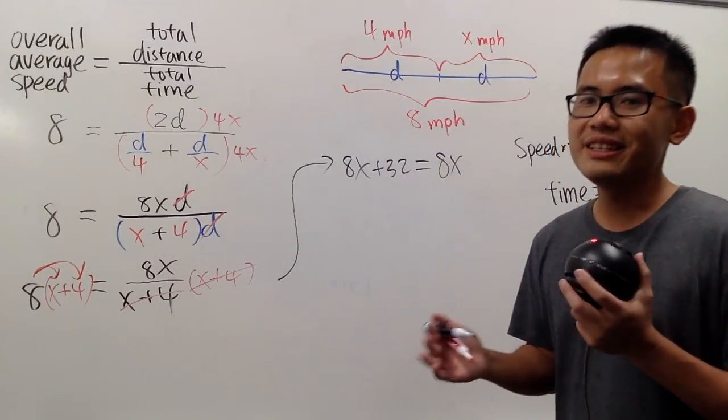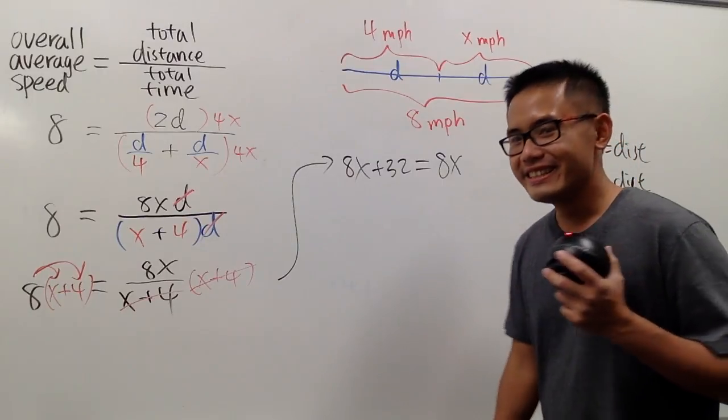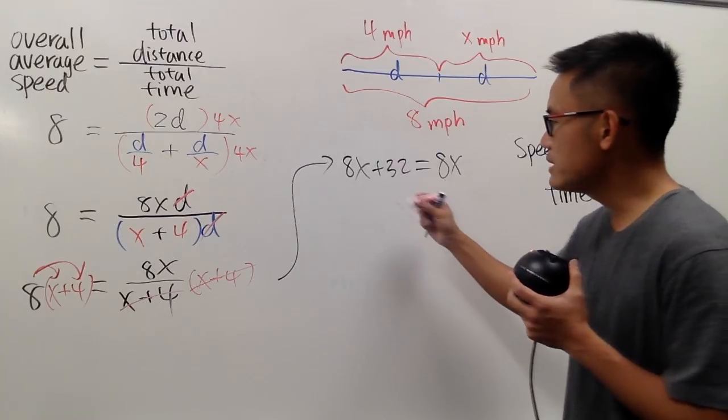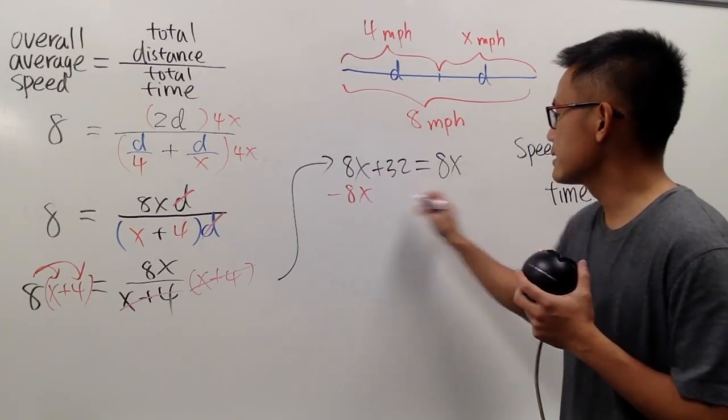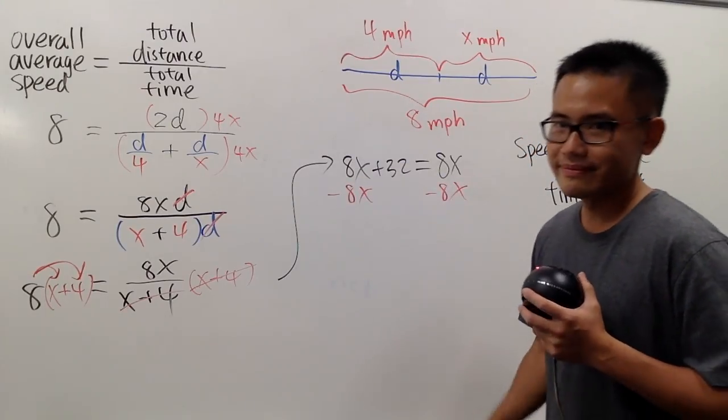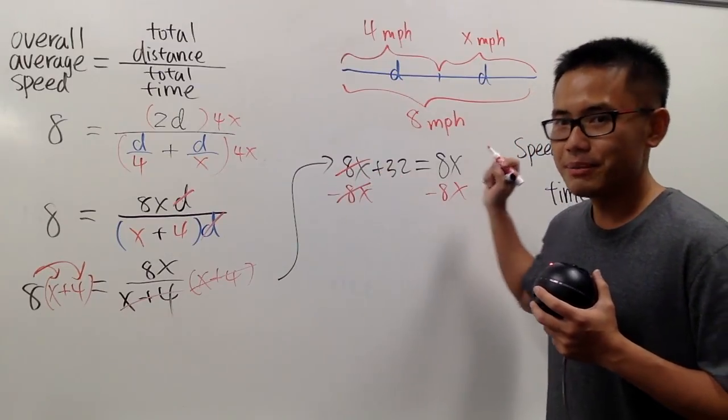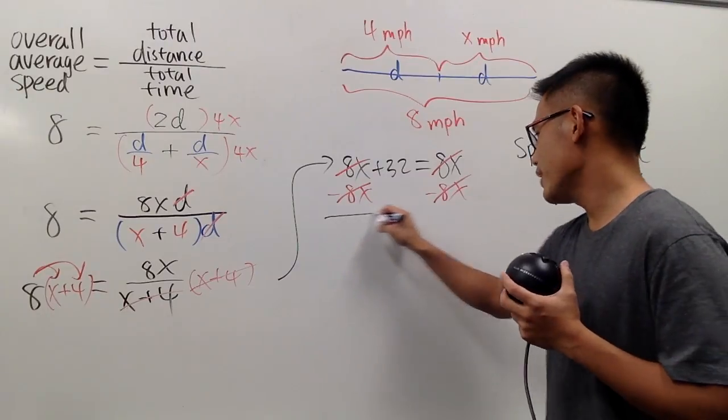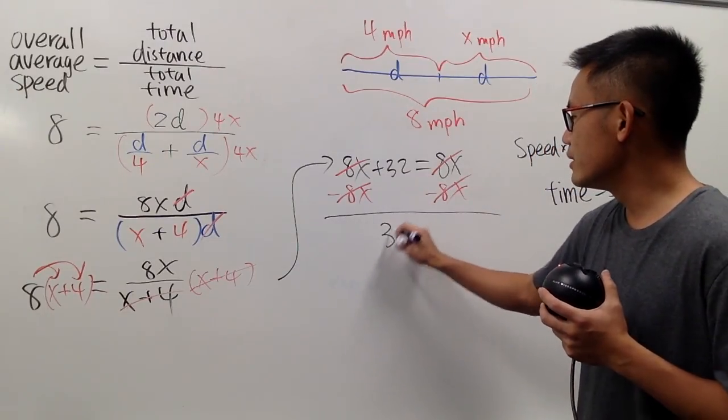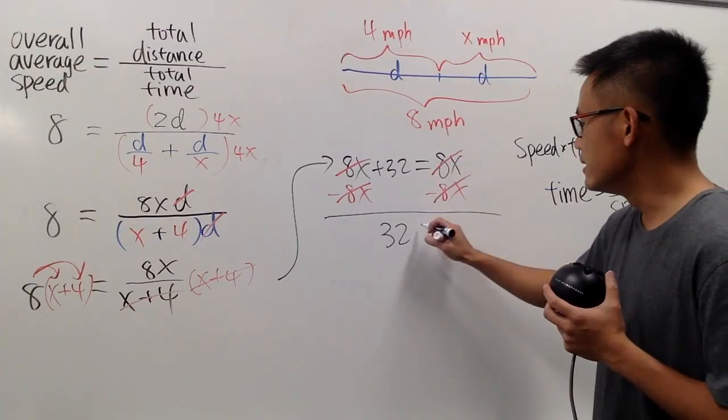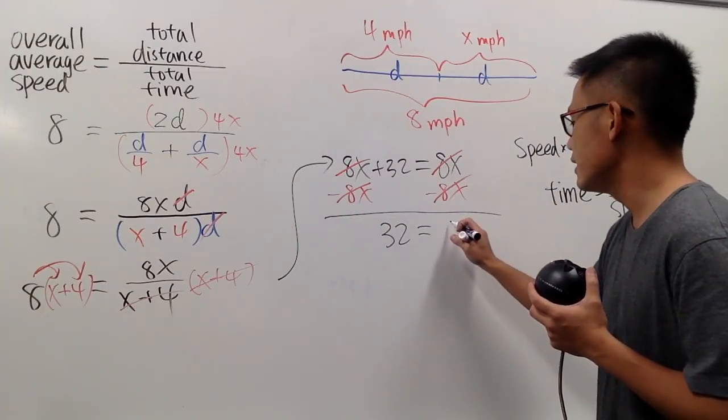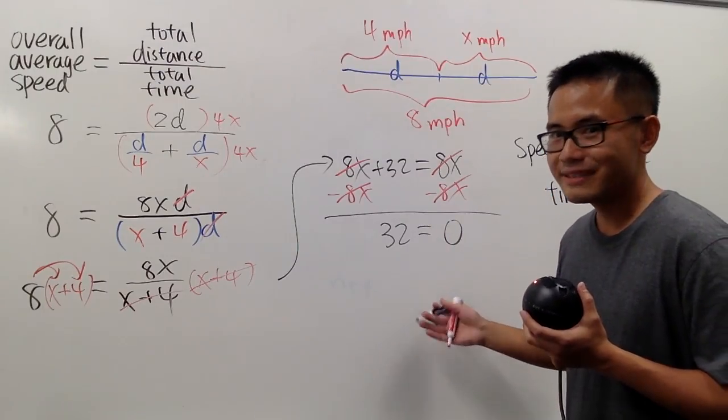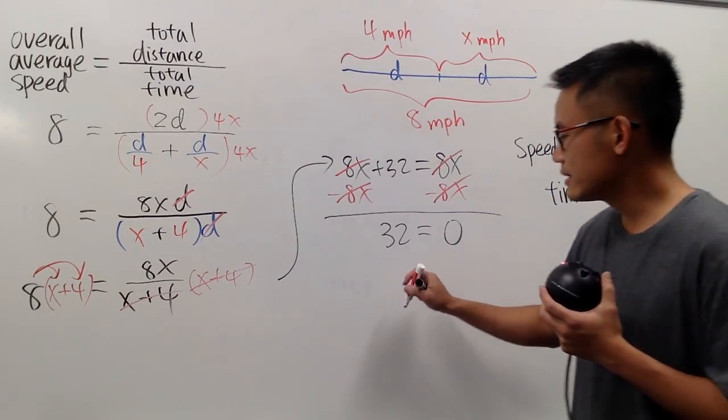And now, do we see anything strange? Yes, right? Because right here, the moment that we subtract 8x on both sides, this and that cancel it, good, but this and that also cancel it. It's strange, because now we have 32 on the left-hand side, and on the right-hand side, this is equal to, we have nothing here anymore, so it's equal to 0. No more x, right? Well, this is impossible.